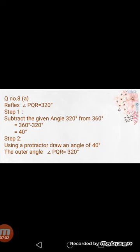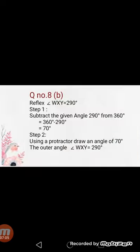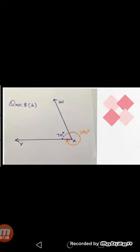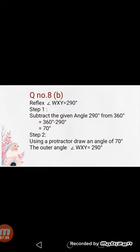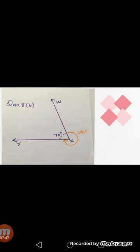The steps of construction for the reflex angle are also given. Now see the second part of question number 8. We have reflex angle WXY which is equivalent to 290 degrees. Similarly, we will subtract 290 degrees from 360 degrees and the result will be 70 degrees. So using the protractor, draw a 70 degree angle. Then in step 2, mention the reflex angle and mark the outside angle as 290 degrees. In the diagram, the reflex angle is shown in orange color.